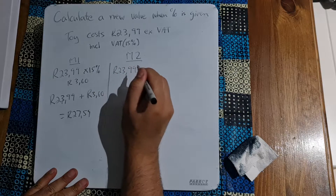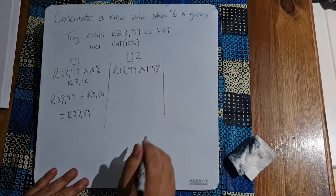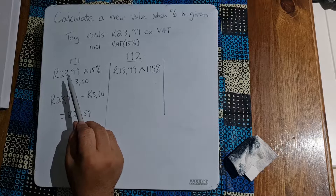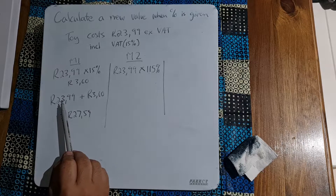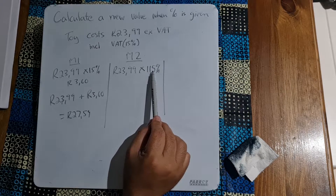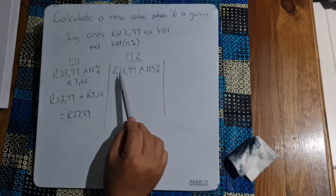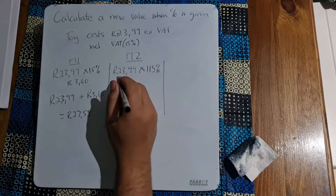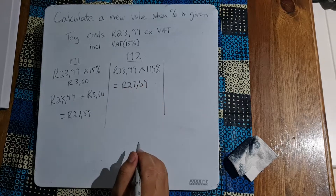Method number two is quite simple — I'm taking my 23.99 and simply multiplying it by 115%. Now you might say that's wrong, but have a look at method one: I calculated 15% and had to add it to the original amount, which is 100%. So when I say multiply by 115%, I'm saying multiply by the original amount plus 15% of that amount. It does everything in one step on your calculator.